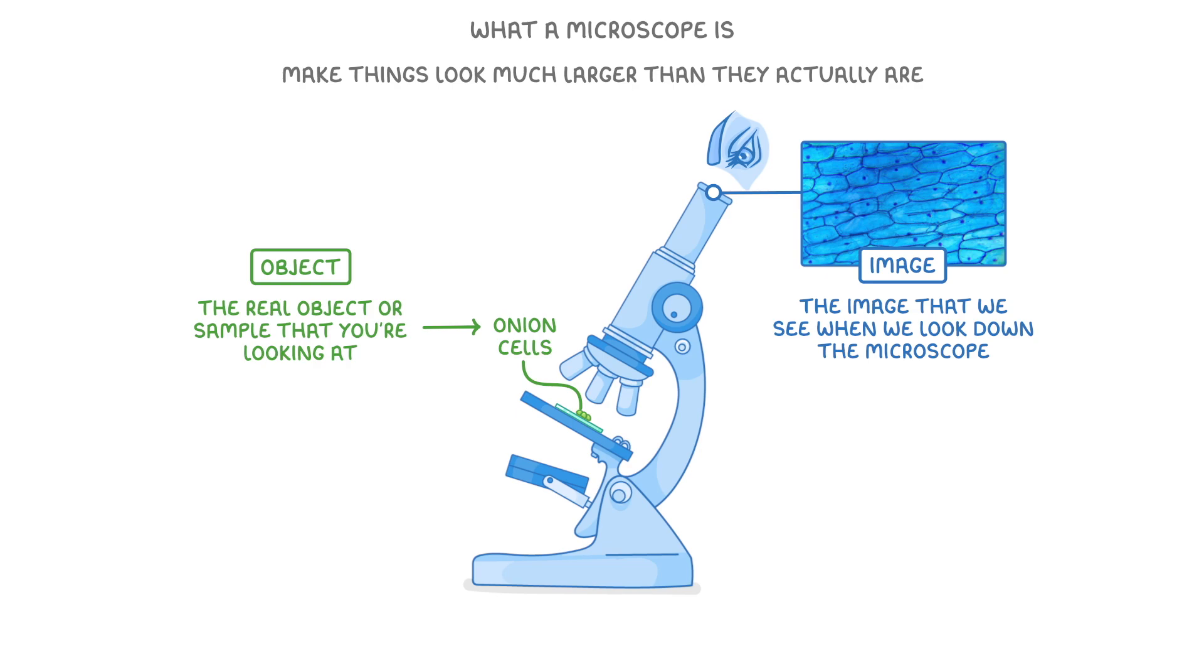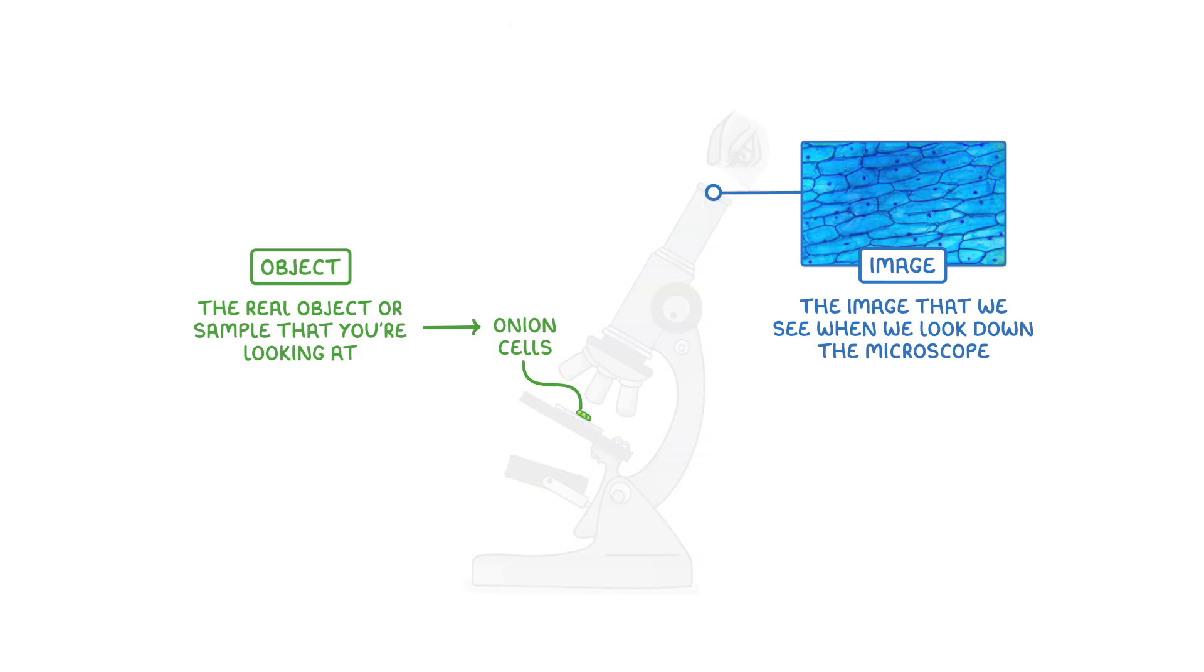Whereas the object is the actual onion cells on the microscope slide that we're looking at. This brings us nicely to the next term you need to know: magnification, which we can define as how many times larger the image is than the object.